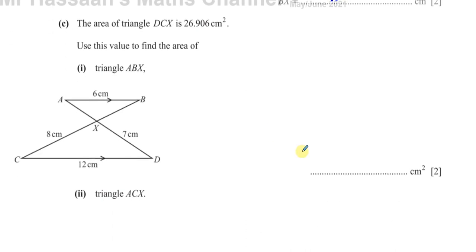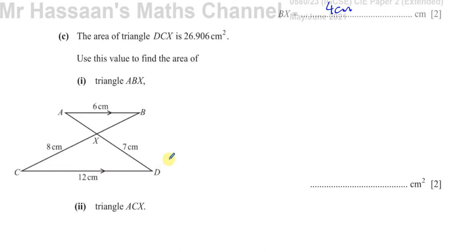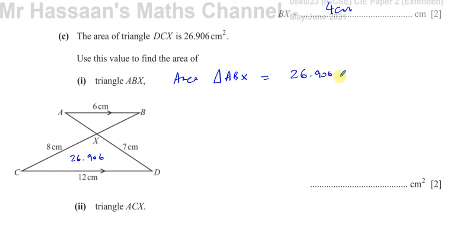Part C says the area of triangle DCX is 26.906 centimeters squared — that's the bigger triangle. We need to find the area of triangle ABX. Now I take the area of 26.906, and I know the ratio of lengths is 6 over 12. But since this is area, I must multiply by the ratio of the areas — and the ratio of areas is always the square of the ratio of the lengths.